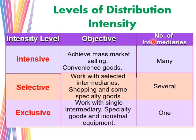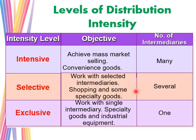To summarize, I've provided a comparison table of intensive, selective, and exclusive distribution levels with their objectives and number of intermediaries — this is straightforward and easier to remember in terms of the strategies that can be applied. With that, we finish Chapter 7. I hope you've watched this video and are ready for our live session. Thank you and see you!